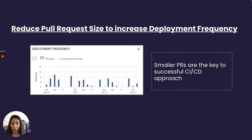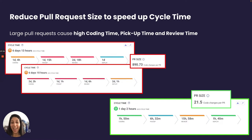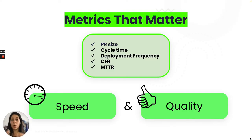Another interesting finding: working and delivering small pull requests also increases your deployment frequency. If you split your work into smaller pieces, naturally you will deploy more releases. Teams that maintain a small pull request delivery approach have very low cycle time, meaning they perform at high speed, reach production faster and more frequently, and therefore their developers have more impact on customers — which maintains their happiness.